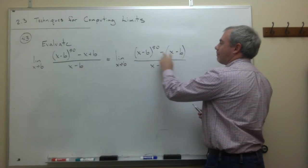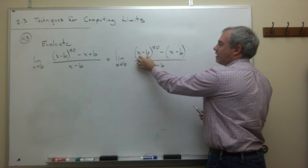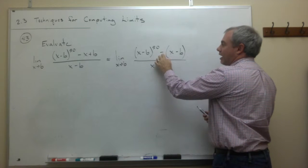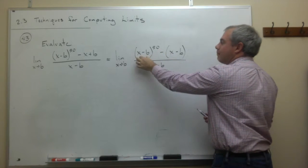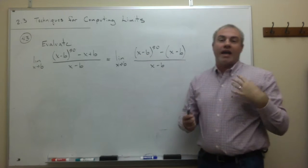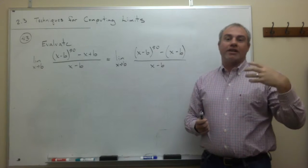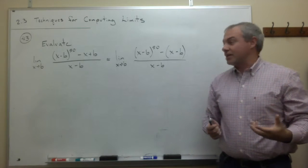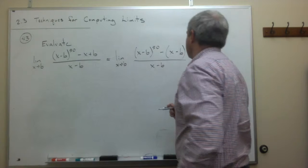Well, now on the top, I notice that x minus b to the 50th and minus x minus b, they both have a factor of x minus b. So I could factor out an x minus b, and that would be very helpful. Let's do it.